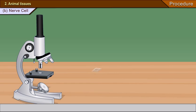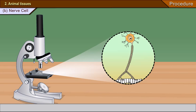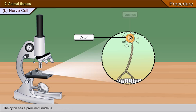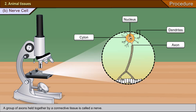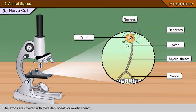B. Nerve cell: A nerve cell or neuron has a large body called cytone. The cytone has a prominent nucleus and cytoplasmic projections called dendrites. One of the dendrites is long and is called the axon. A group of axons held together by connective tissue is called a nerve. The axons are covered with a medullary sheath or myelin sheath.